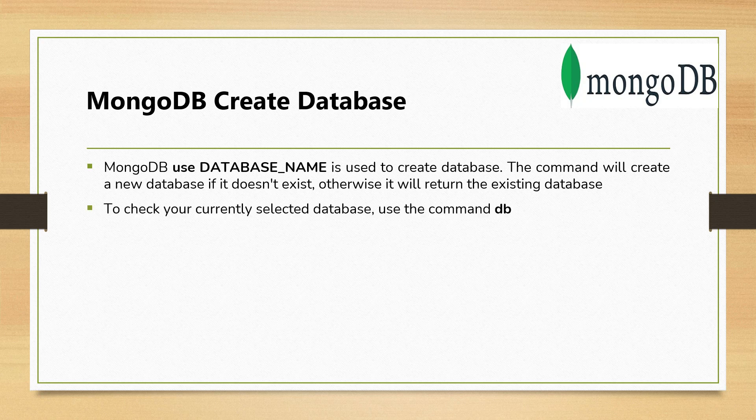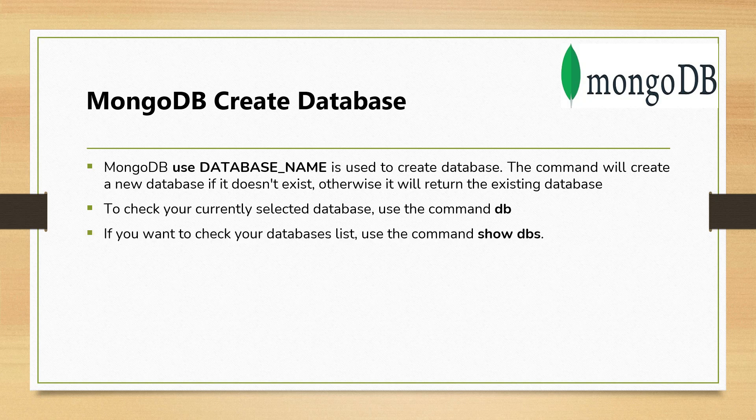To check your currently selected database, just use the command `db` and it will return the currently connected database name. If you want to check your databases list, then you need to use either `show dbs` or `show databases`, and it will list out all the existing databases currently present in your MongoDB.